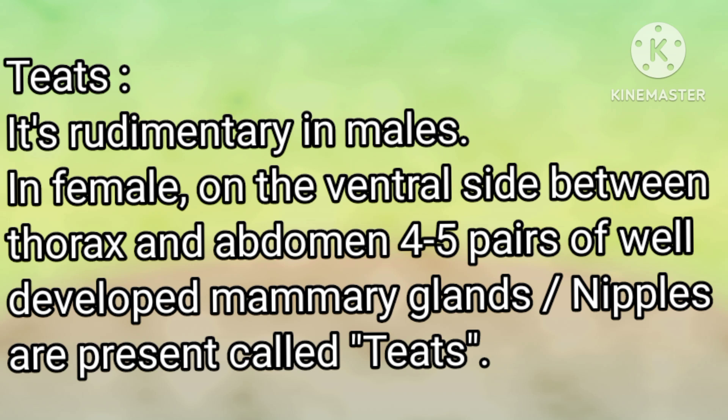Teats: These are rudimentary in males. In females, on the ventral side between thorax and abdomen, four to five pairs of well-developed mammary glands or nipples are present, called teats.